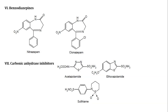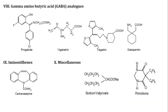Next is Carbonic Anhydrase Inhibitors. Examples are Acetazolamide, Ethoxazolamide, and Sultiame. Next is GABA analogues, or Gamma-Aminobutyric Acid analogues, having anticonvulsant activities. Examples are Progabide, Vigabatrin, Tiagabine, and Gabapentin.